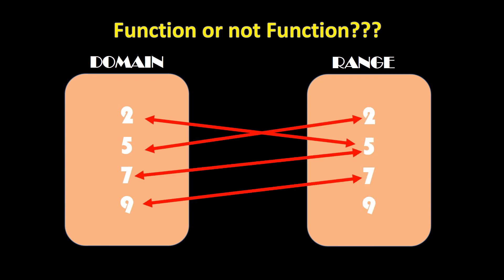Next, looking at 2, 5, 7, 9 in this example — each of the elements has a connector, and each element has only one connector. So this means this is a function. I hope that's clear, everyone, and I hope you learned something.